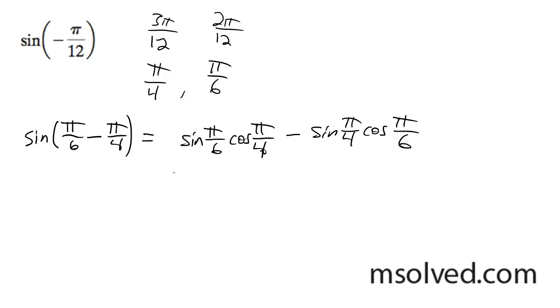So the sine of pi over 6 is 1 half. Cosine of pi over 4 is root 2 over 2. Minus sine of pi over 4, which is root 2 over 2. And then the cosine of pi over 6, which is equal to root 3 over 2.